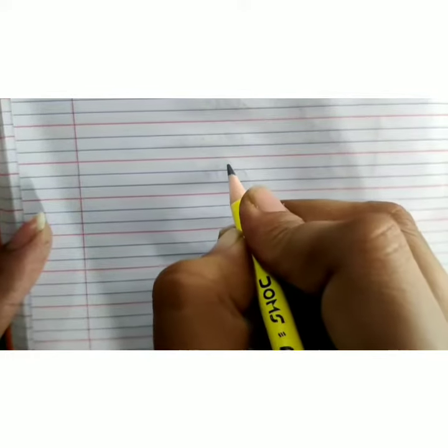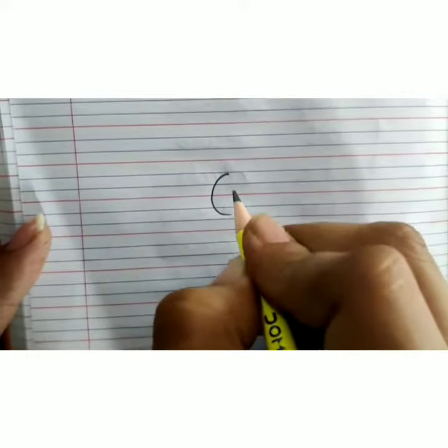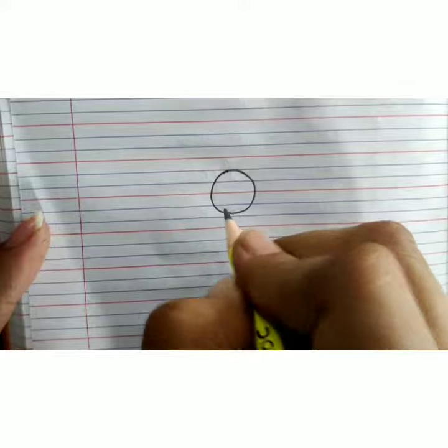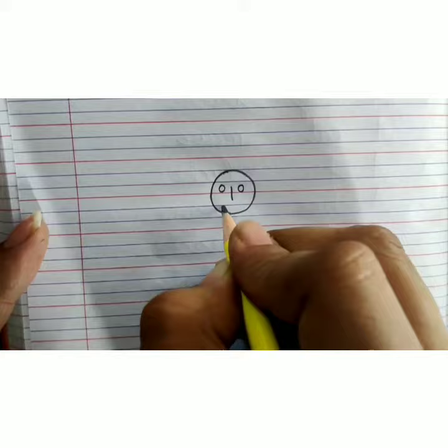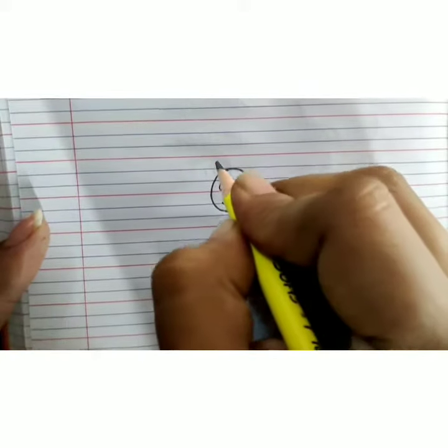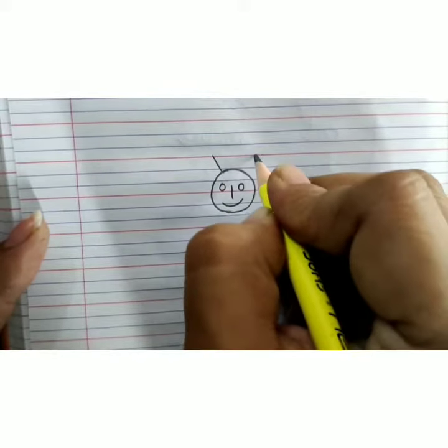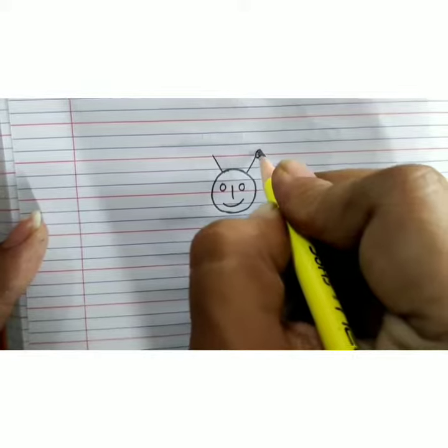First of all we will draw a small circle like this. Inside that draw 2 more circles, a standing line, and a half circle. Now upside draw 2 slanting lines and small circles.